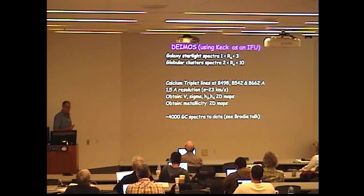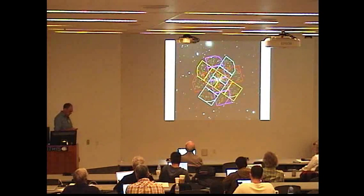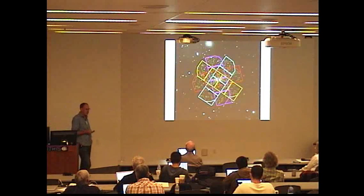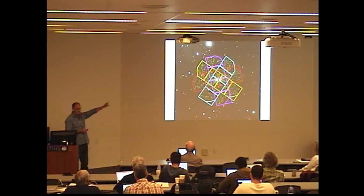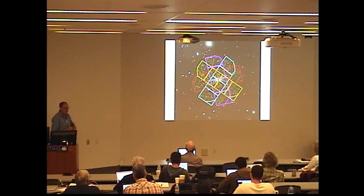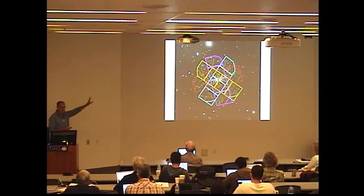That was mostly the focus of Jean's talk, so I'm not going to talk much about globular clusters but focus on the starlight today. Here's what we do: there's a Deimos footprint and there's four Deimos masks that we tile around a galaxy, getting the starlight in the inner regions and the globular clusters further out.